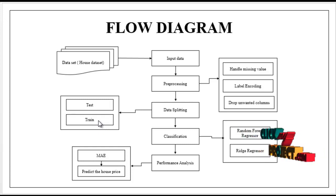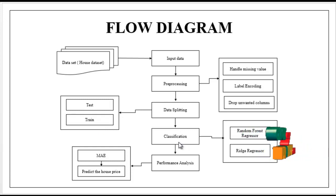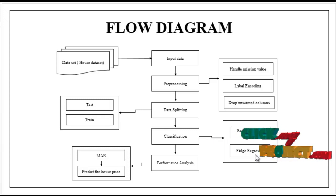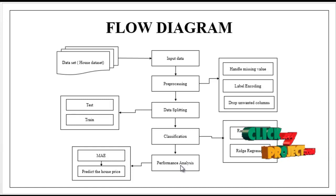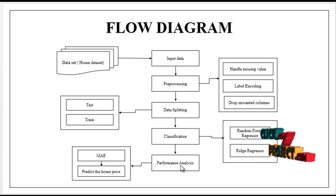A smaller portion of the data is present in the testing part. Then we have implemented the classification algorithm. In this classification we are using regressions such as Random Forest regressor and Ridge regressor. After that we have to estimate some performance metrics like error values, that is the mean squared error. With the help of this error value we have to predict or estimate or forecast the house price based on your input attributes. So this is the flow of our process.